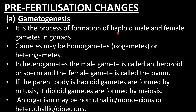Gametes are always haploid with N number of chromosomes, and they are formed in the gonads. Gametes may be homogametes, which are similar in shape and size, or heterogametes, which are dissimilar morphologically. In heterogametes, the male gamete is called antherozoid or sperm, and the female gamete is called ovum. If the parent body is haploid, gametes are formed by mitosis.